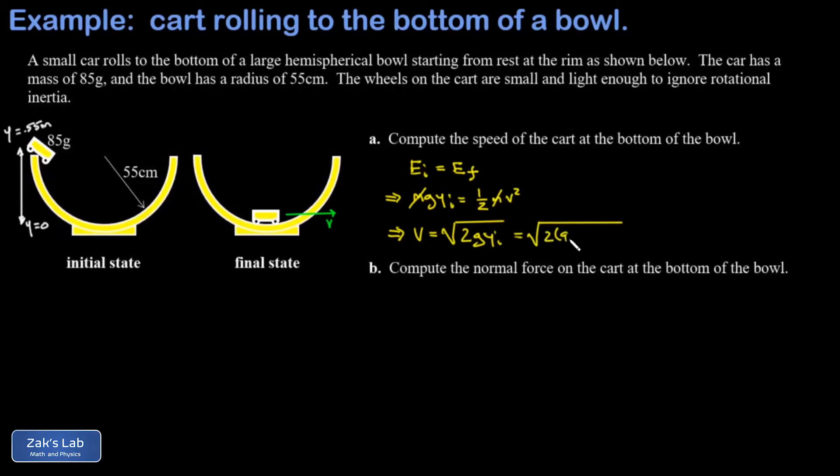We plug our numbers in and I've got two times 9.8 times 0.55 meters for the initial height. When I run the numbers on this to three sig figs I get 3.28 meters per second.